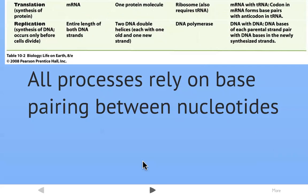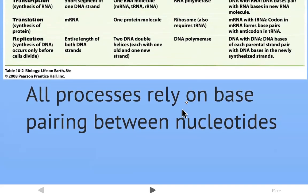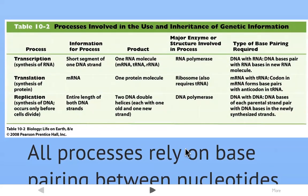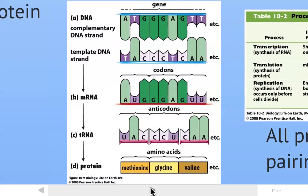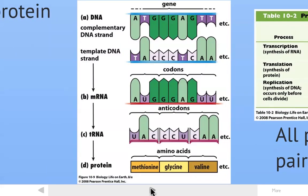And that messenger RNA can then leave the nucleus and undergo the second process of translation, which is taking that information copied into the RNA molecule and using it to create a protein. All of these processes rely on the base pairing between the nucleotides. Remember the A and T base pairs, and the GC base pairs.